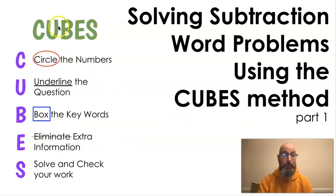Let's see what CUBES is, because we need to know what CUBES is if we're going to use it. In CUBES, each letter stands for something else. The C stands for circle the numbers. The U stands for underline the question. B stands for box the keywords. E means eliminate extra information - eliminate means get rid of, take it away, cross it out. And S is solve and check your work, because you always want to solve and check your work.